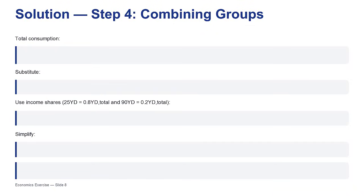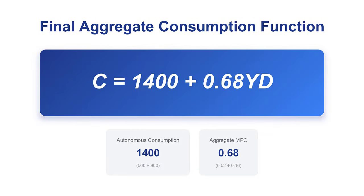0.68 is the single marginal propensity to consume for the entire economy. The final number is so much closer to Type A's 0.65 than to Type B's 0.8 — even though Type B is a much bigger group and individually more willing to spend. That's the core insight: the sheer weight of income concentration in Type A pulls the entire economy's behavior toward their own patterns. Their 80% income share means they completely dominate the marginal response. The enthusiasm of the other 90 households is heavily muted.